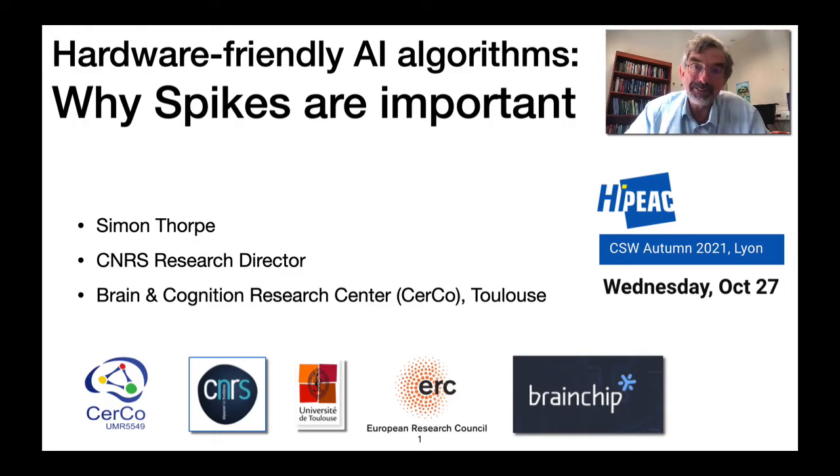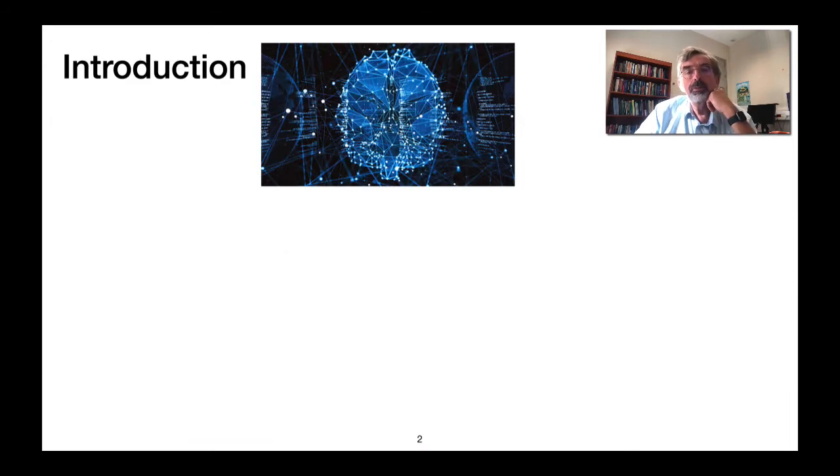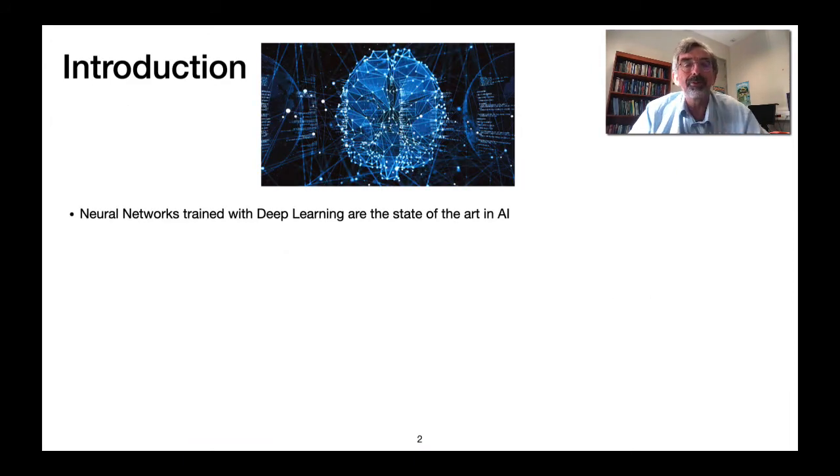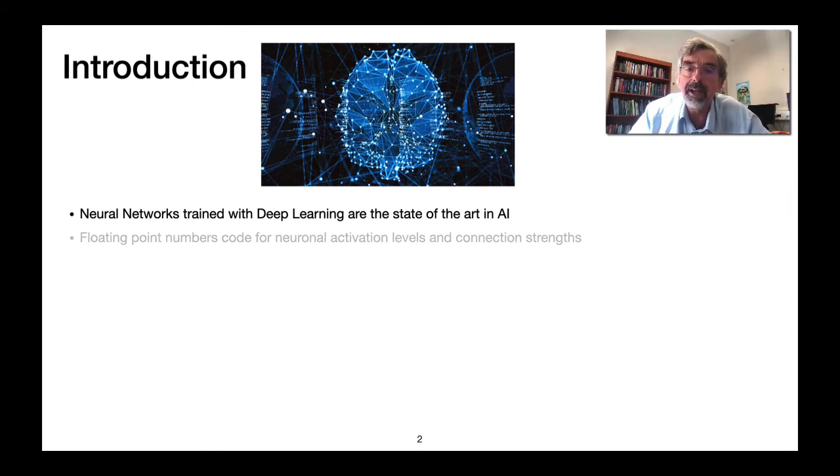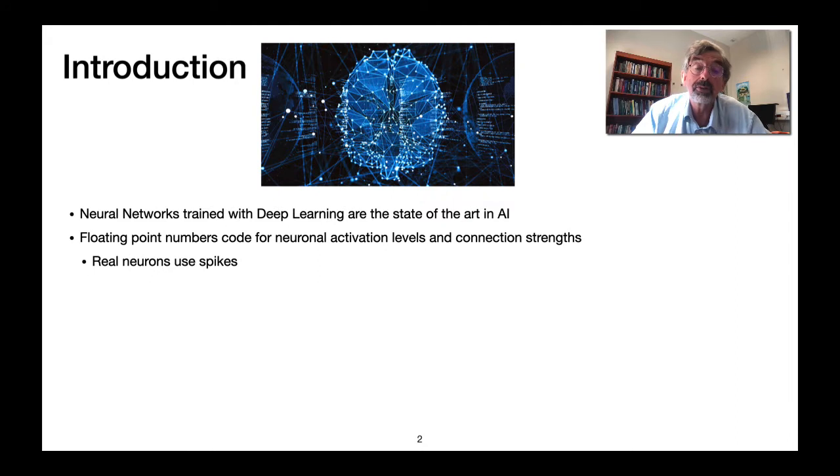Hi, so first of all thanks for the opportunity to talk to you today. We've heard a lot this week at this conference on neural networks trained with deep learning. Clearly they're the state-of-the-art in AI and they use floating-point numbers typically to code neuron activation levels and connection strengths, whereas everybody knows that real neurons use spikes.